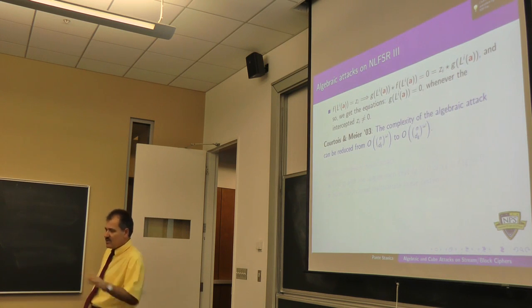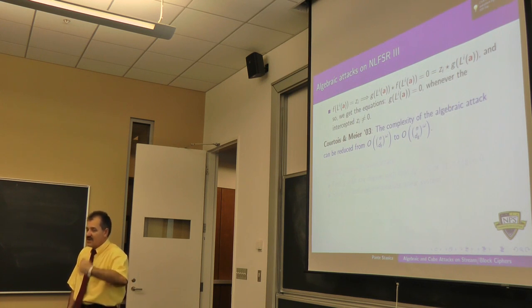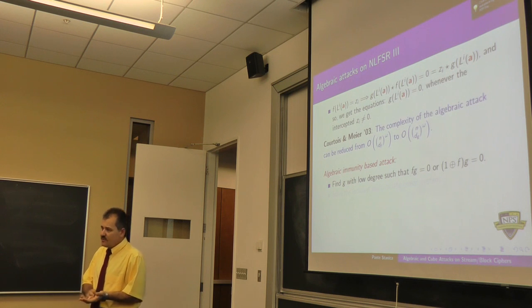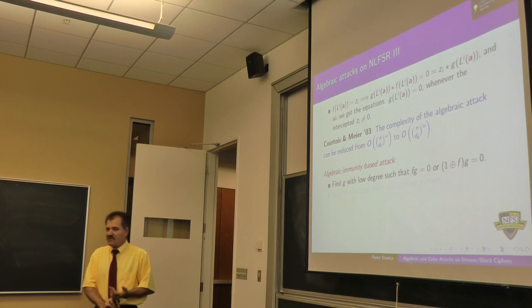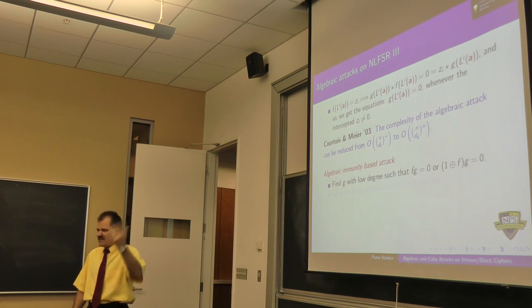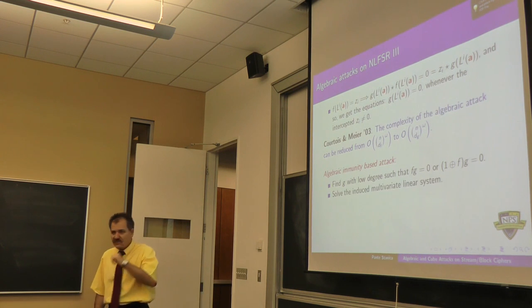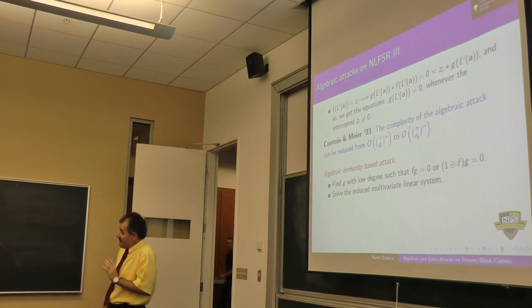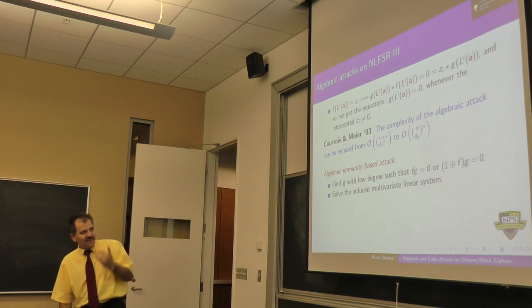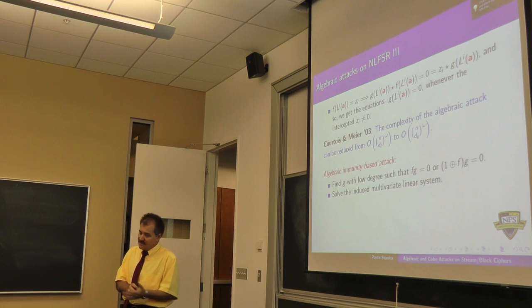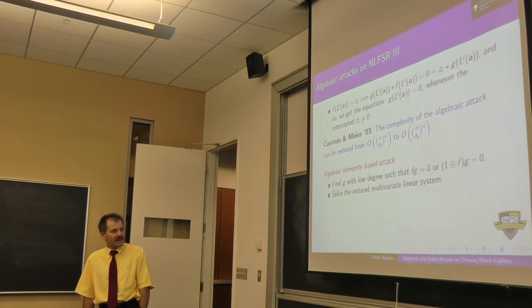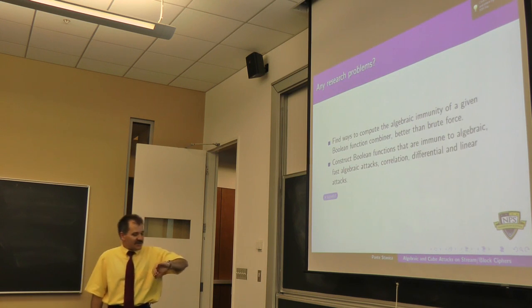The complexity was proven in 2003 to decrease from big O of n choose d of f to big O of n choose d of g. The degree of the annihilator is assumed to be a lot smaller than the combiner you started with. You may think, does this work in practice? Actually it works. Toyocrypt was broken this way. Lily stream cipher and Lily 128 were broken this way. There are other ciphers broken for fewer rounds using this method. This is the algebraic immunity-based attack. Find g with low degree, doesn't have to be the lowest, then solve the induced linear system.